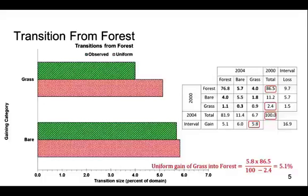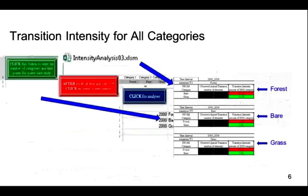This video and the Pontius Matrix show the dynamics of only the first category in the contingency table. If you want to analyze all categories simultaneously, then please use the Intensity Analysis 03 Excel file created by Aldwyk, which contains the computer program to perform the calculations quickly. Obtain the file at the link in the video description. The software reads the category names, the time points, and the contingency table, and then produces output for every category.